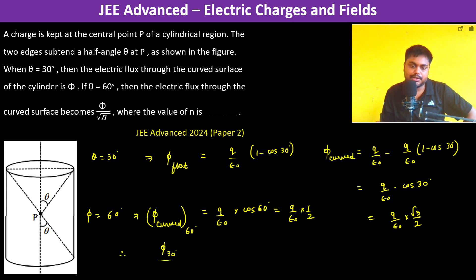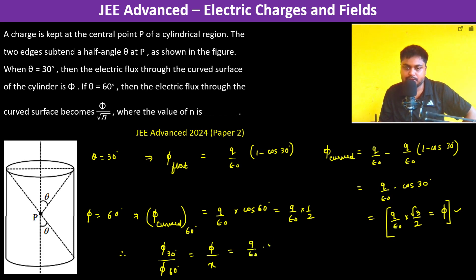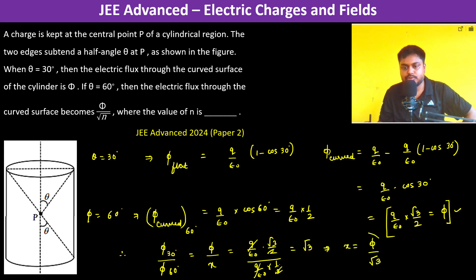Now we compute the ratio phi(30 degrees) divided by phi(60 degrees). Let phi(60 degrees) equal x. This ratio equals (Q by epsilon naught times root 3 over 2) divided by (Q by epsilon naught times 1 over 2), which simplifies to root 3. Therefore x equals phi divided by root 3.